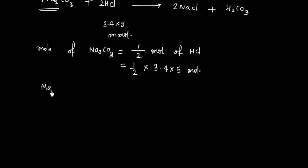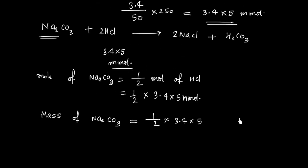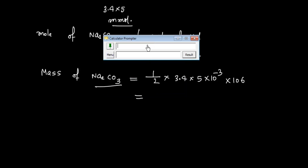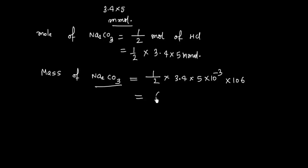So now we can calculate mass of Na2CO3. Mass of Na2CO3, this is equals to moles multiplied by molecular mass and this is basically millimole. So this is 10 to the power minus 3 and mass of Na2CO3 molecular mass is 106. So this should be, let us check this value, so we have 0.5 and this multiplied by 3.4 into 5, so this is 3.4 into 5 into 106 and let us divide by 1000. So this is 0.901, so we have 0.901 gram of Na2CO3.